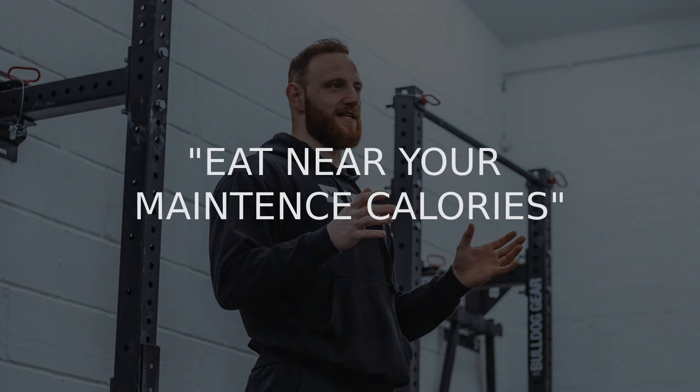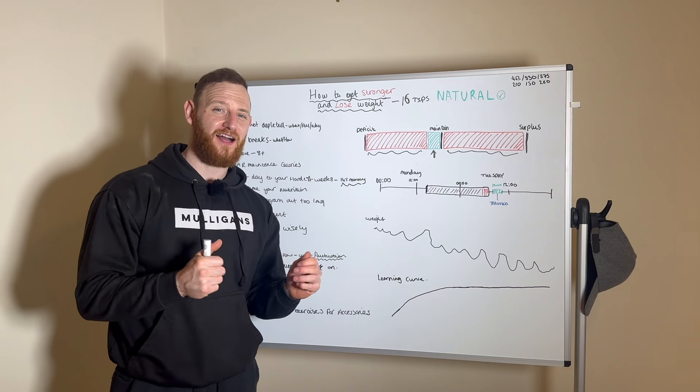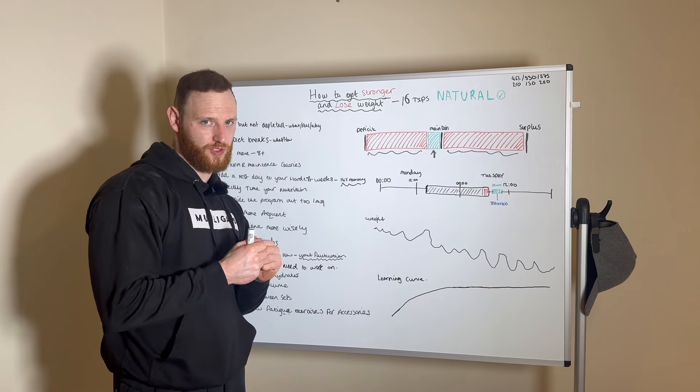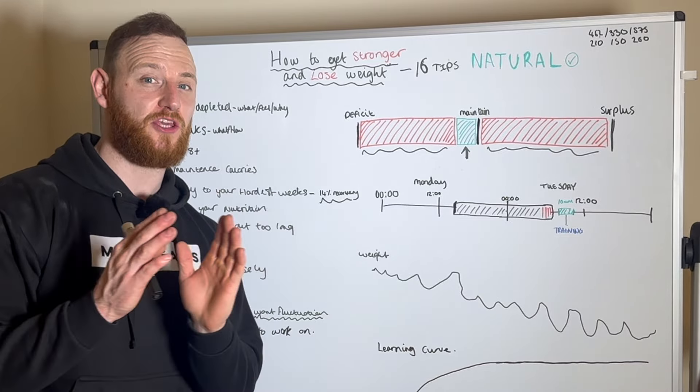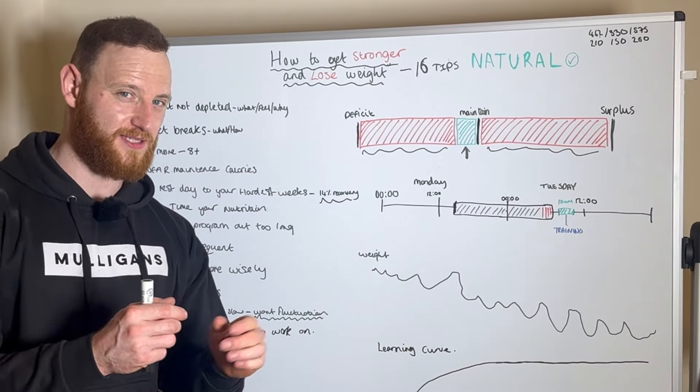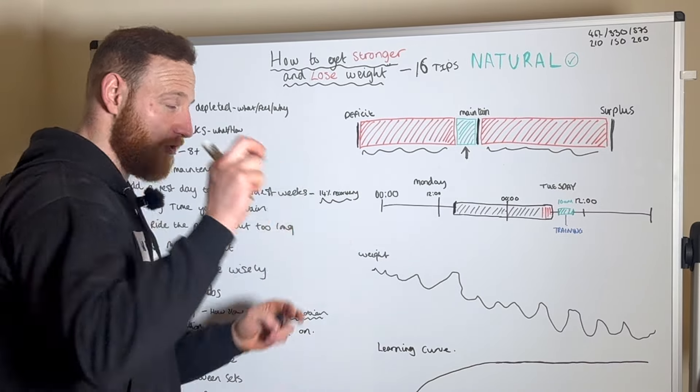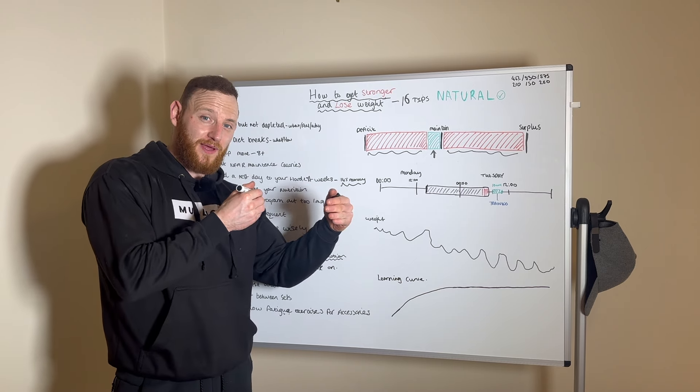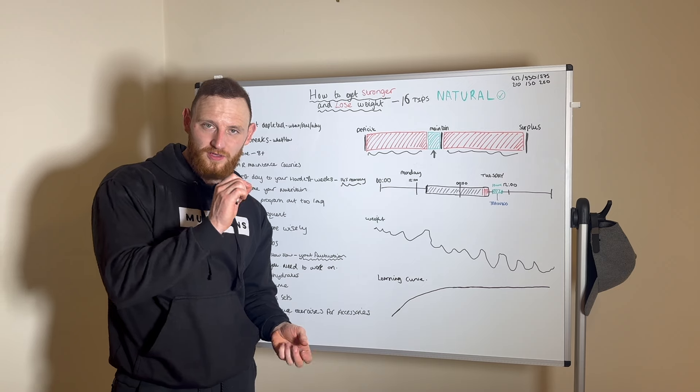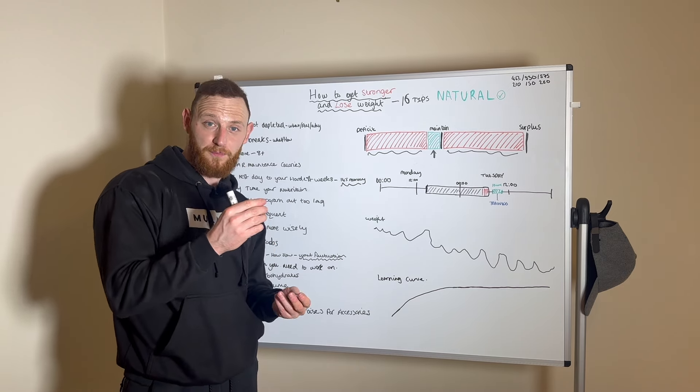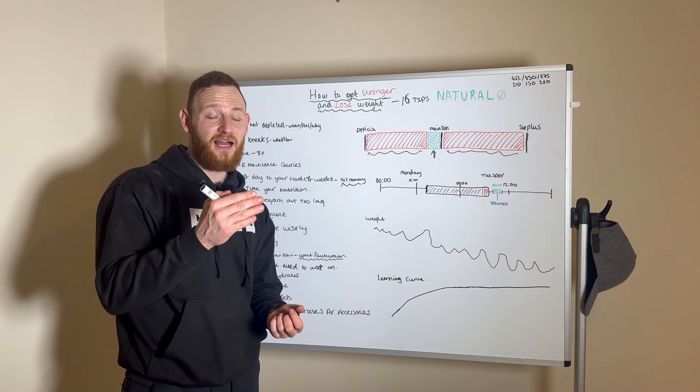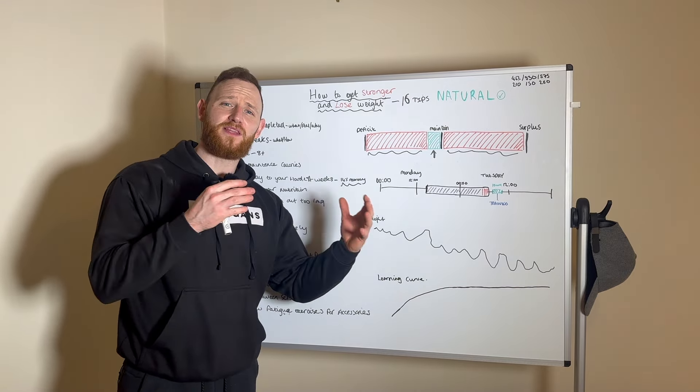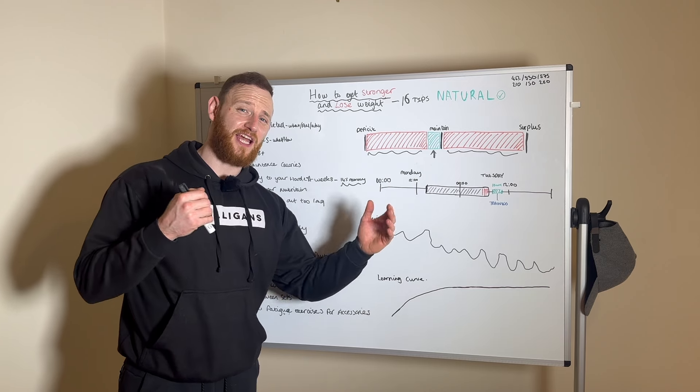Eat near your maintenance calories. And I advise a really accurate way to get your calories right in order to achieve what you want to achieve is initially eating at your maintenance or what you think is your maintenance. If you eat at your perceived maintenance, then after two weeks, if your body weight stayed the same, it was indeed your maintenance. If it's gone up, then you obviously need to eat a little bit less. And if it's gone down, well, it's suiting the goal we need as long as it's supporting training. But if you do it that way, it's a way better educated guess.